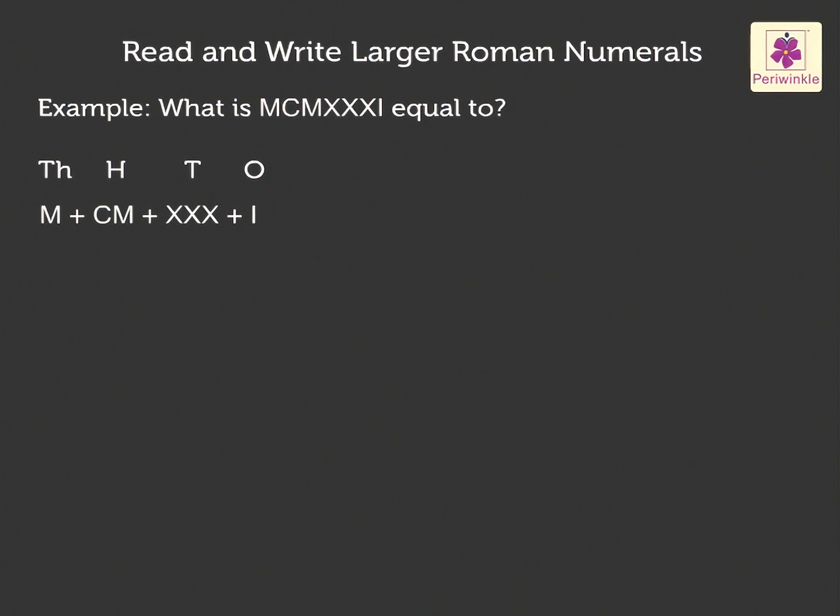Now, let us write down the values of the respective numerals. The value of M is equal to 1000. CM is 1000 minus 100 which is equal to 900. XXX is 10 plus 10 plus 10 which is equal to 30. And lastly, the value of I is equal to 1. On adding 1000 plus 900 plus 30 plus 1, we get the answer as 1931.